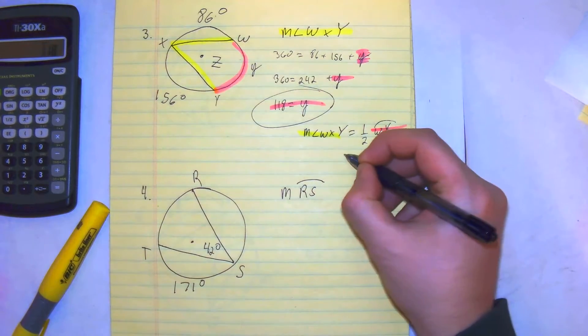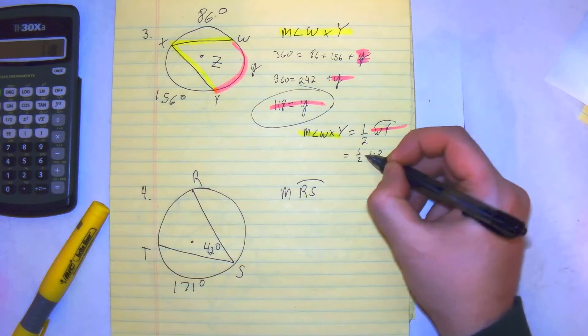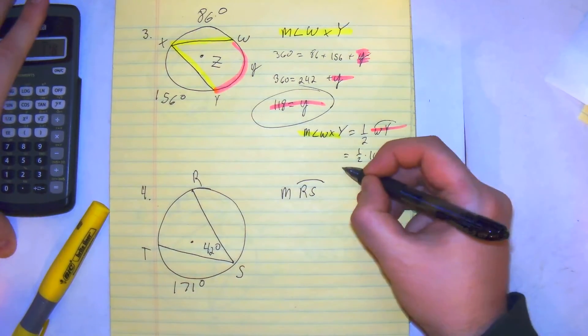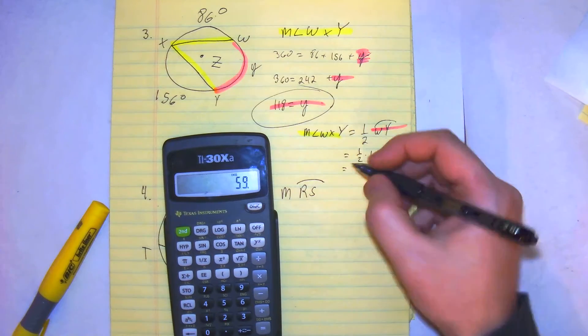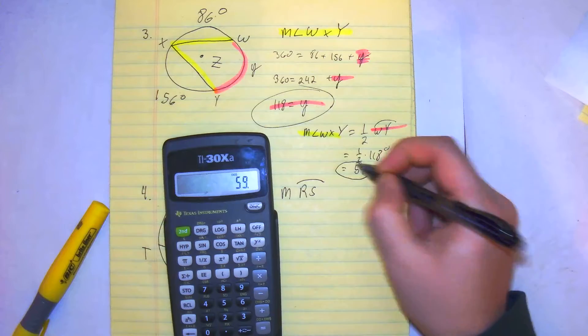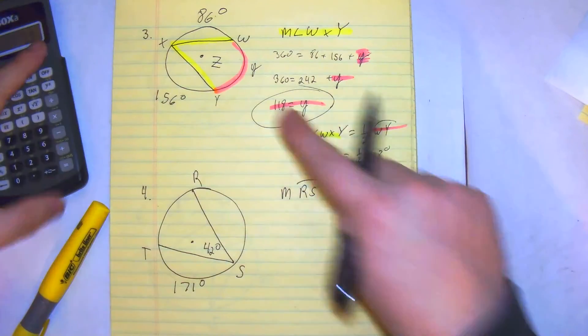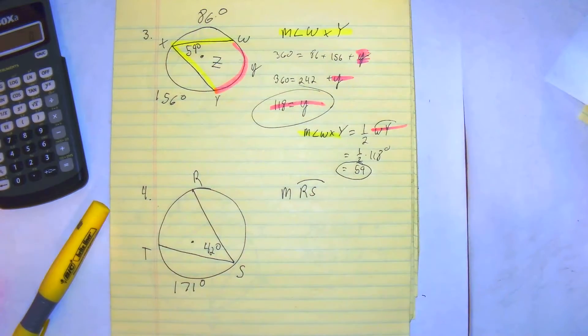We plug it in what we know. We get our answer as 59. We get our answer as 59. So if this is 118, that means this is going to be 59 degrees. There you have it. That's number three.